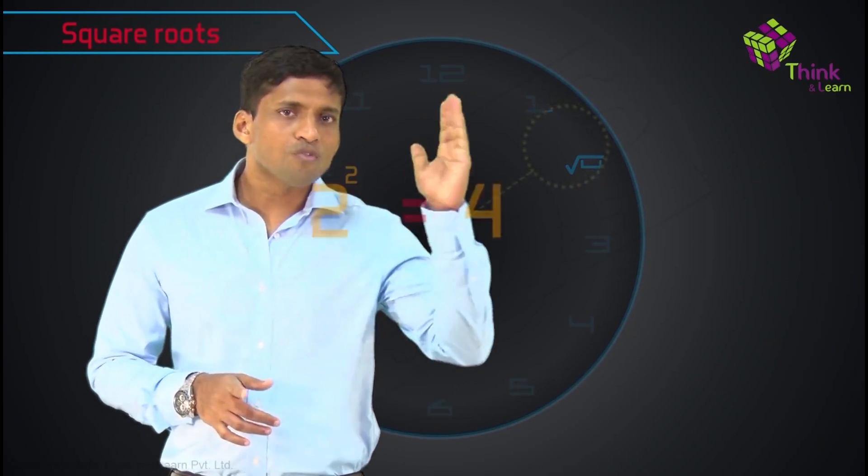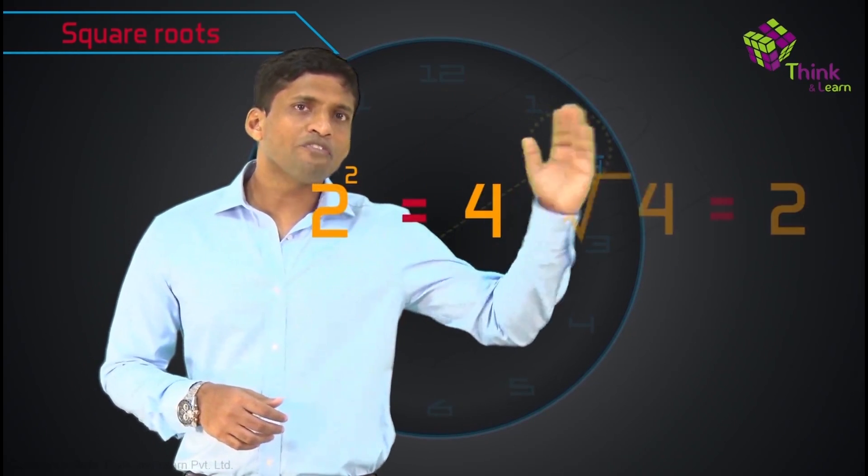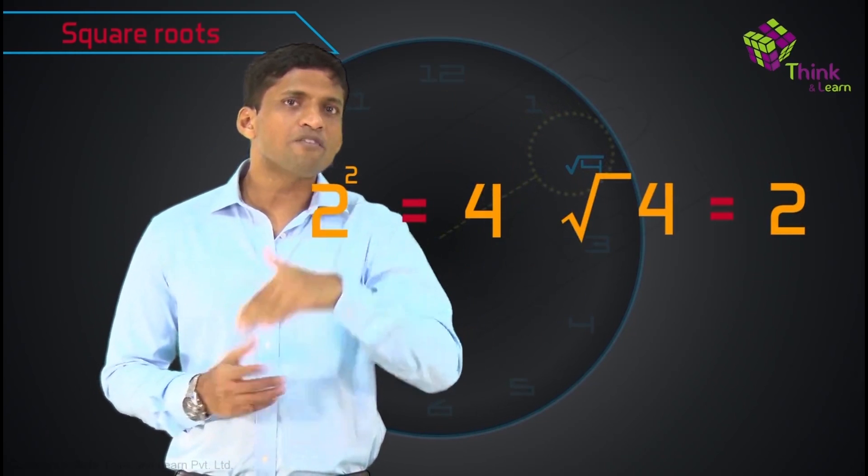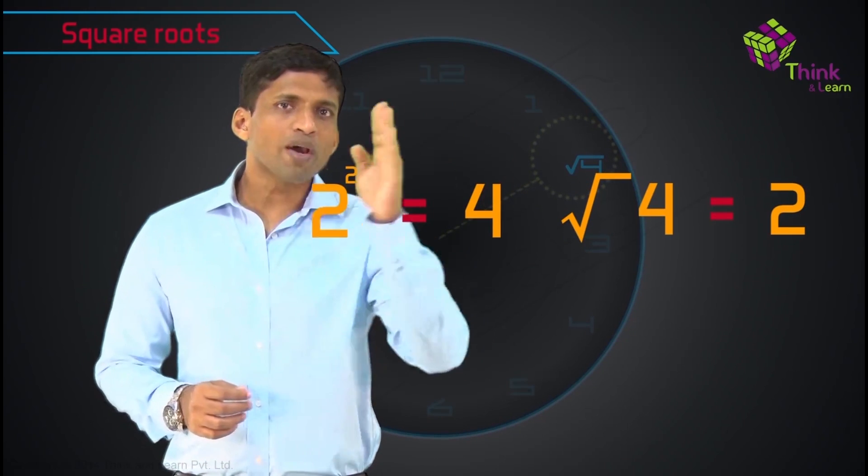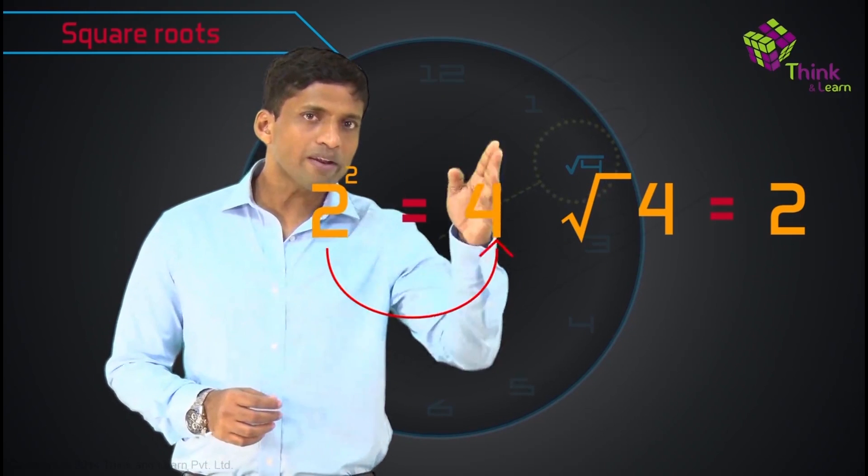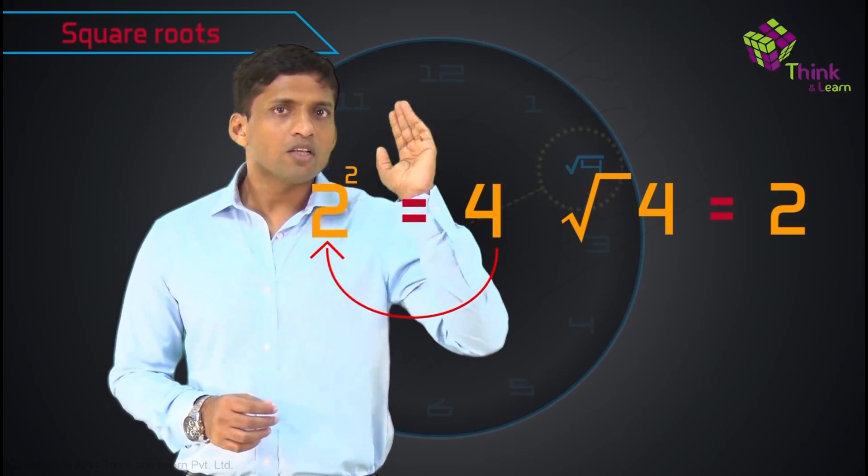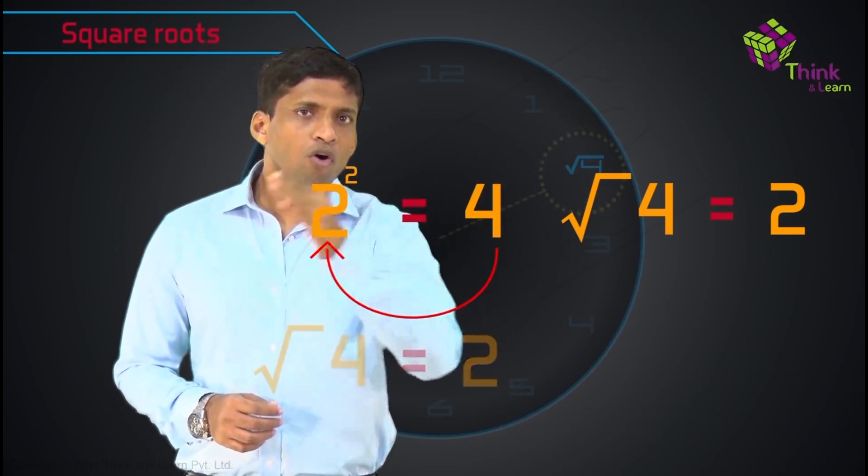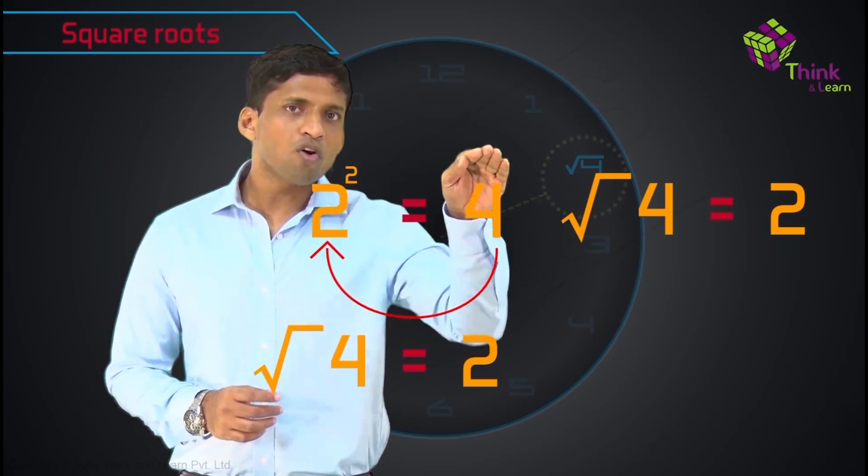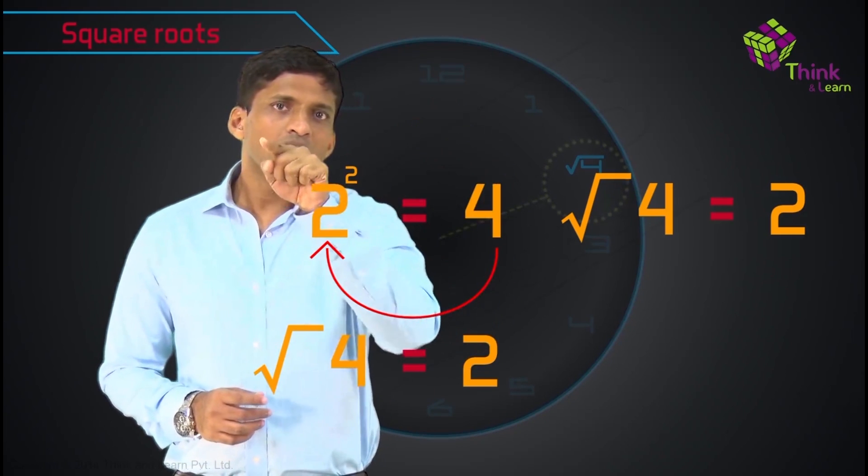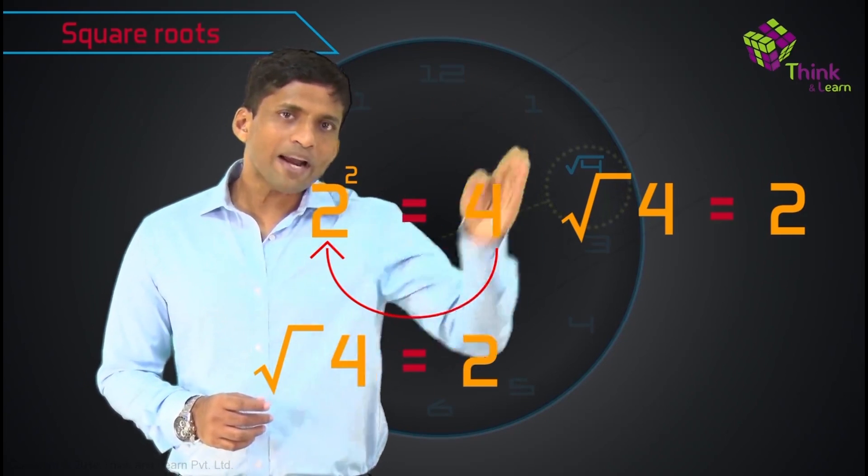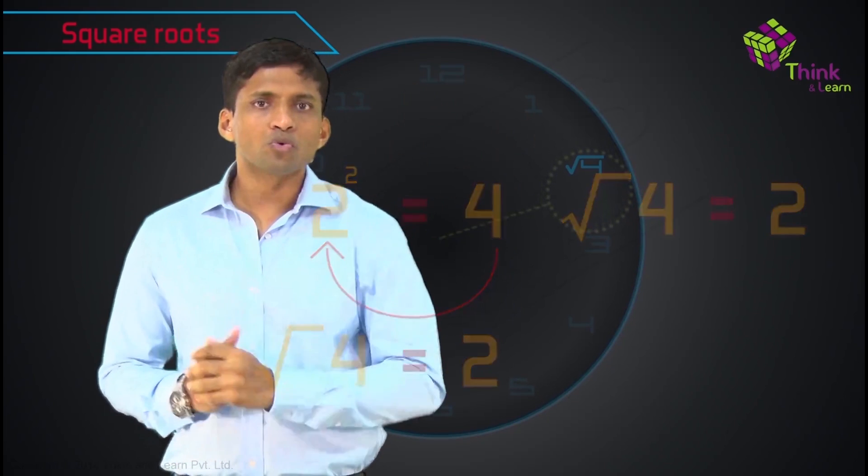We know that 2 square is 4, so square root of 4 is 2. When I say inverse operation, when I write 2 square equal to 4, which is left to right, if I try writing it from right to left, that is square root of 4 is 2. Where if 4 is given as 2 square, when I move from right to left, square root of 4 is 2.